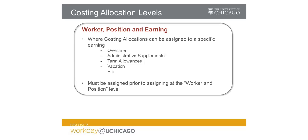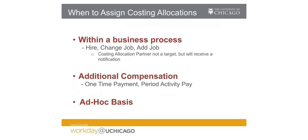If assigning funding to this level, it needs to be done before the rest of a worker's compensation is assigned to the worker and position level. There are multiple scenarios in which you would assign costing allocations within Workday. The task may present itself as part of a business process within hire, change job, or add job.